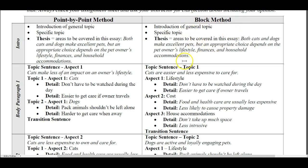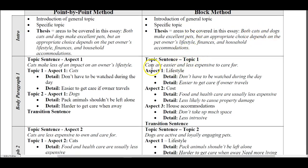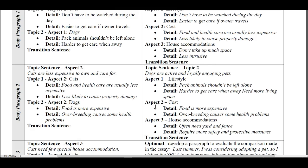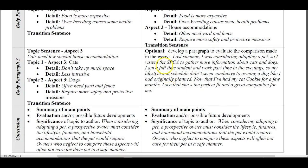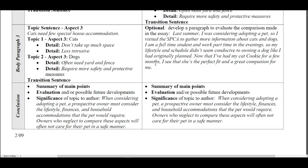Now let's look at the block method, which is called subject by subject. The subjects here are cats and dogs. Topic one: cats — we're only going to talk about cats, then list all of the aspects. Topic two: dogs — talk about dogs and list all of their aspects. Then you can have an optional paragraph that serves as an evaluation of your first two paragraphs, bringing them together, and then your summary paragraph.